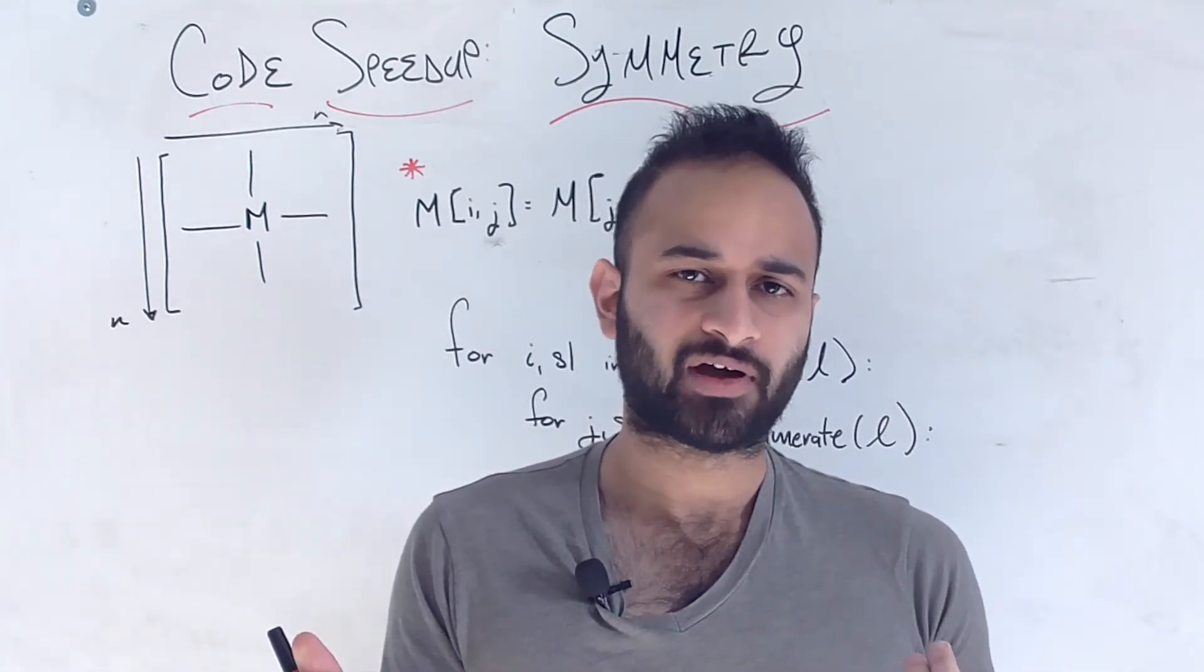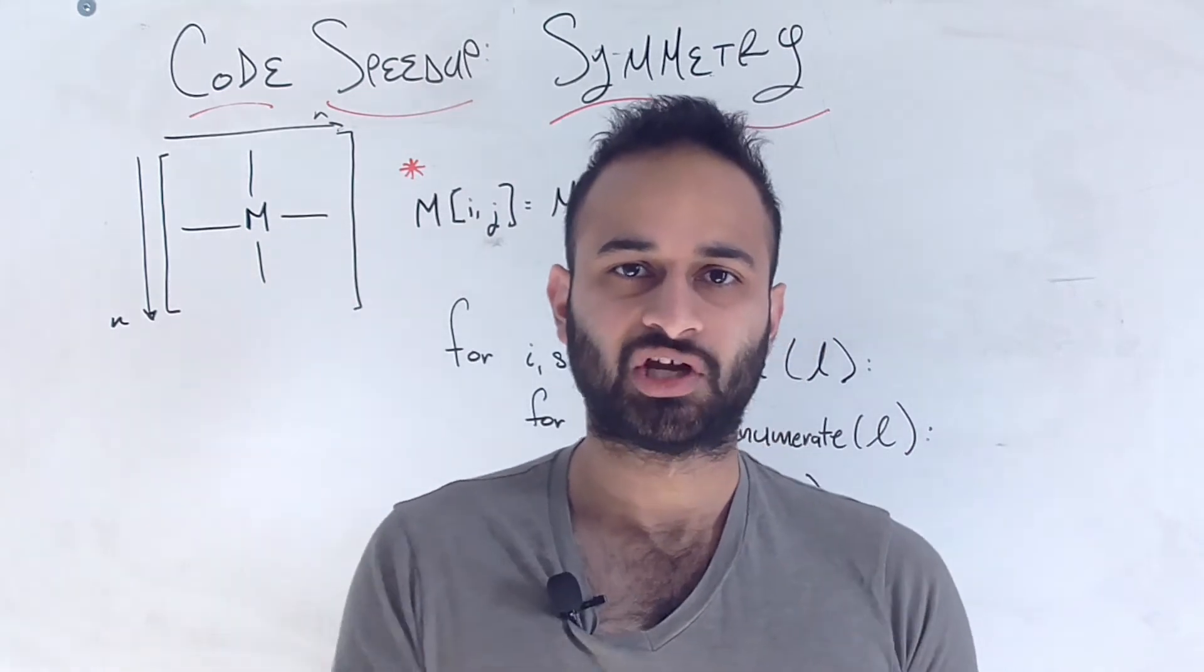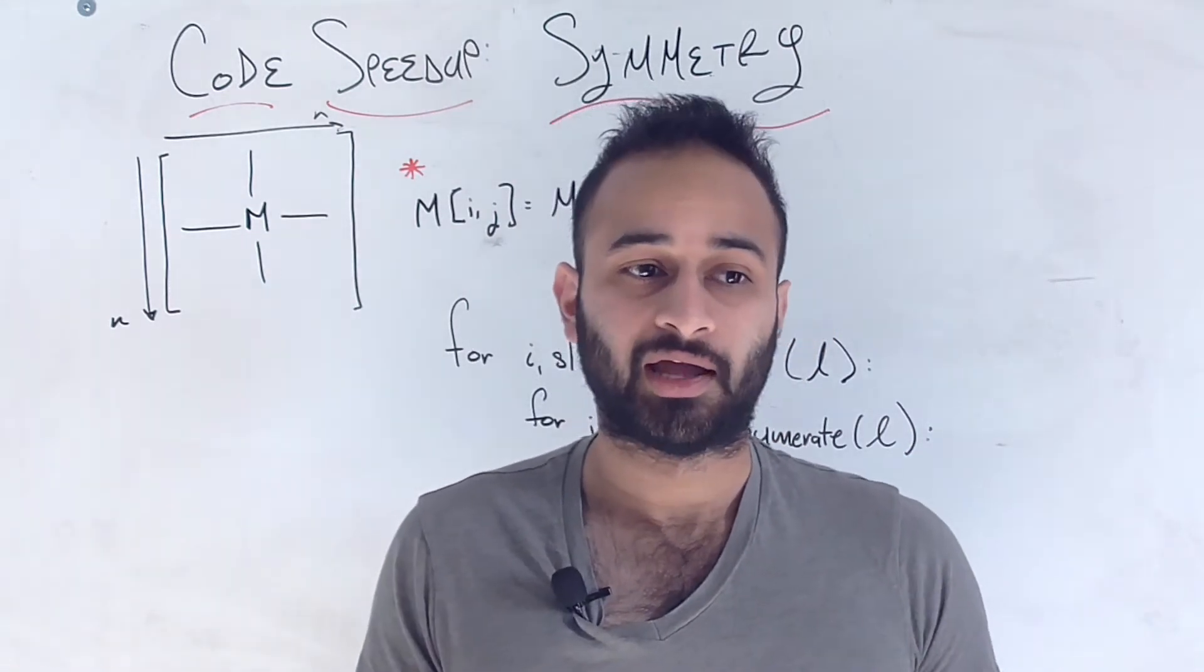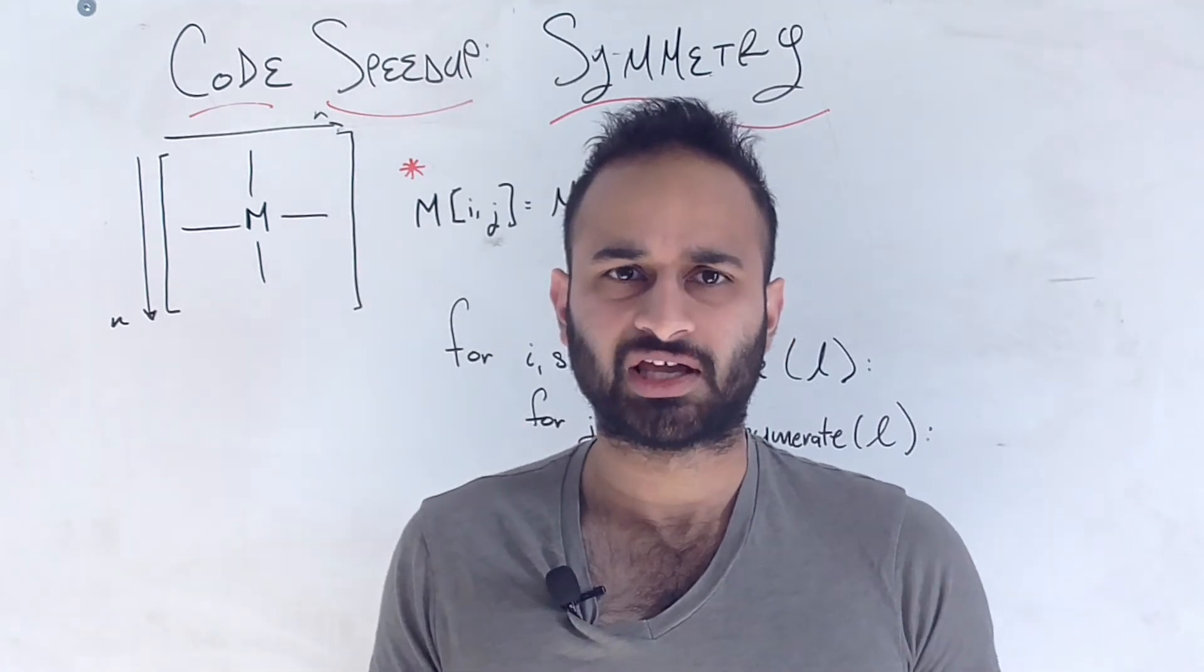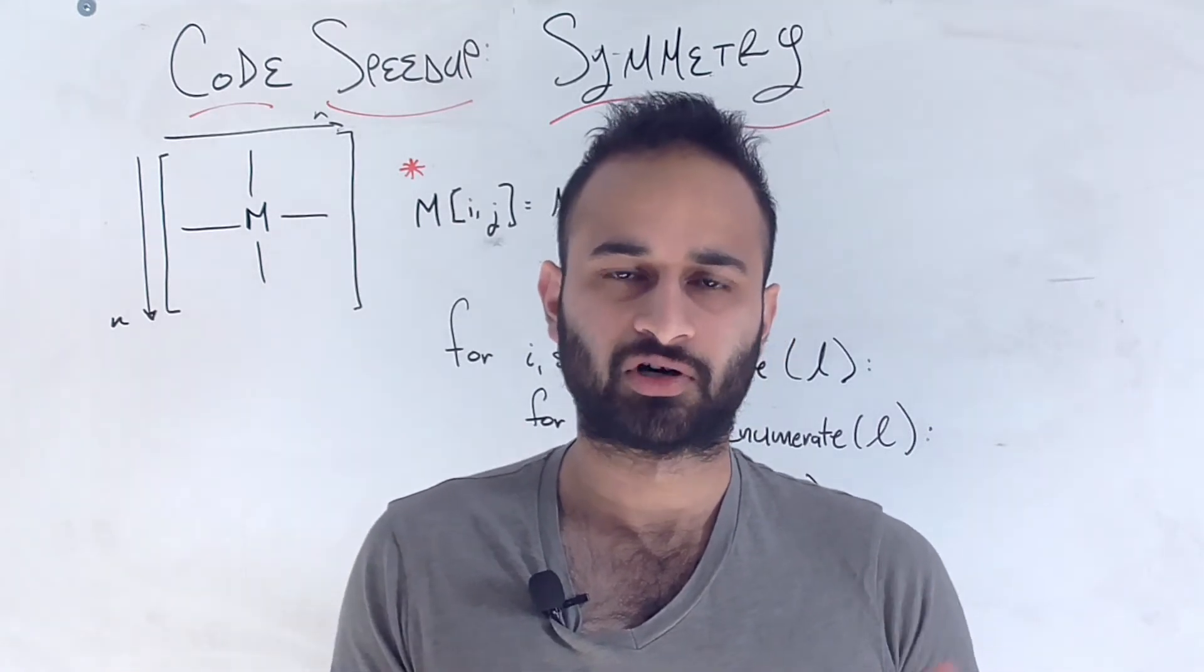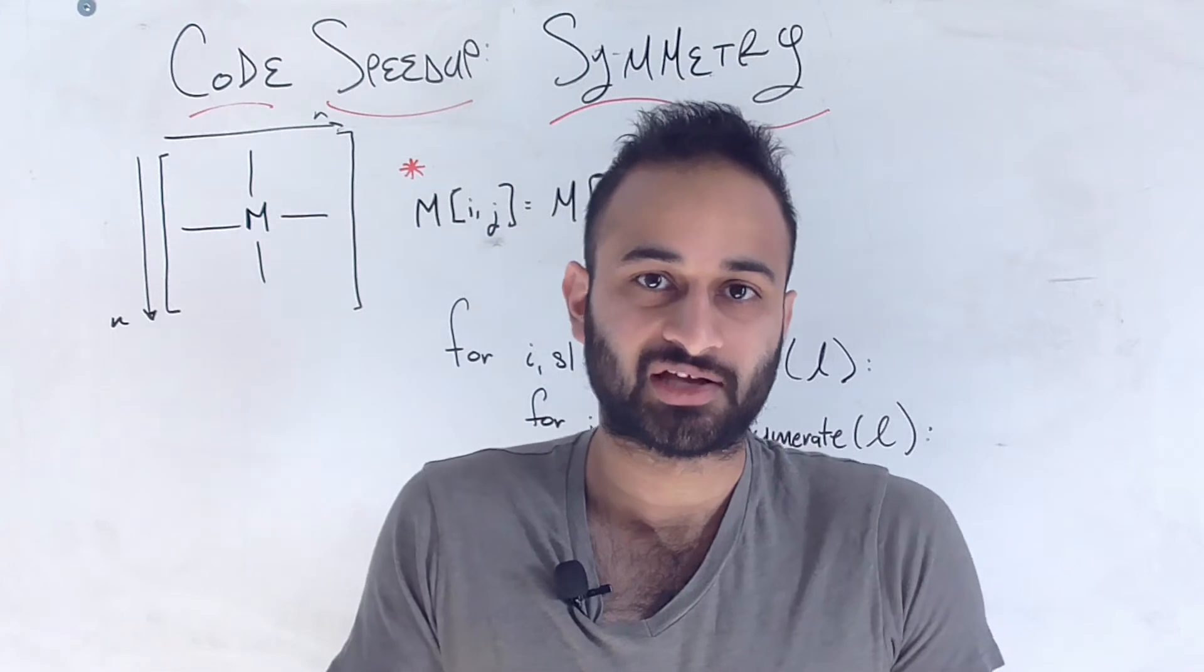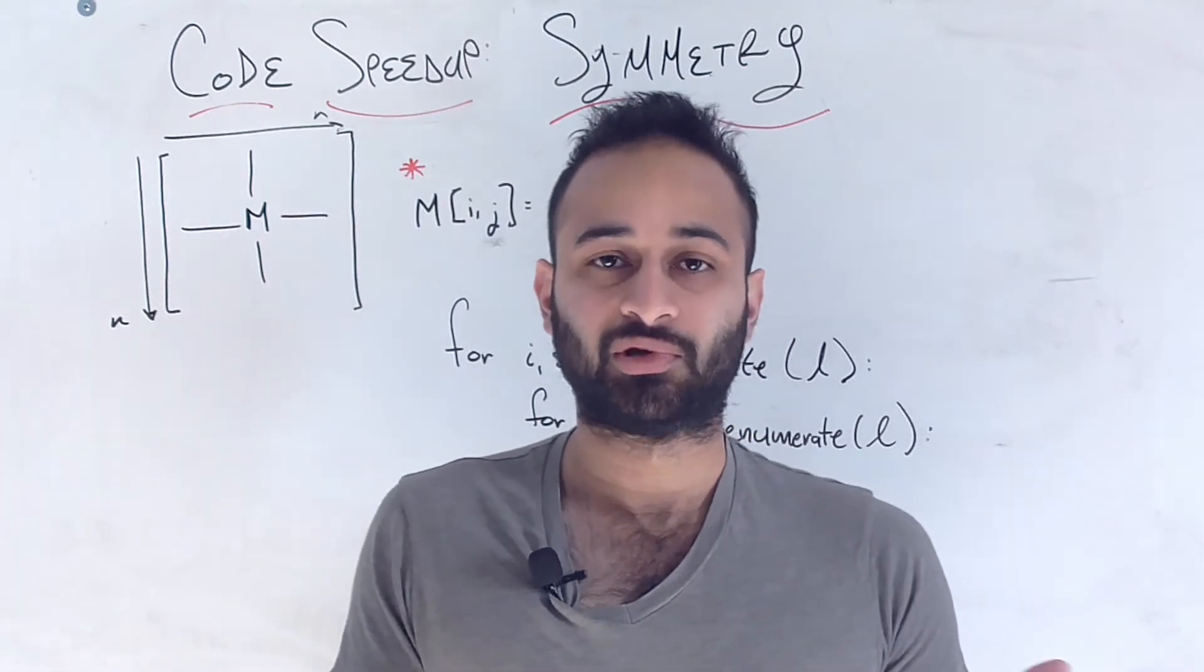Now, if you think about it, if I say the similarity between student i and j is 0.3. And then I ask you, what's the similarity between student j and student i? You'd probably say, you asked me the same question. You just reversed the order of the students. And the answer is yes, that's true. So the similarity should be also 0.3.